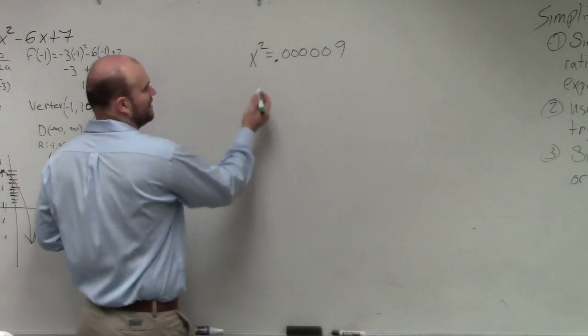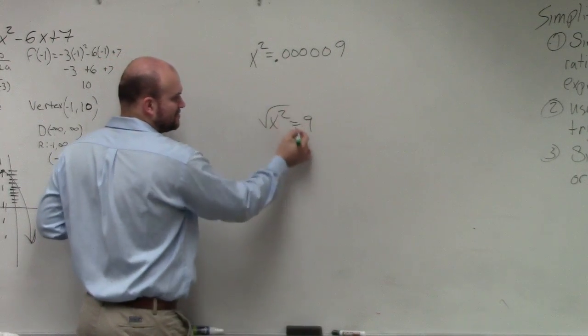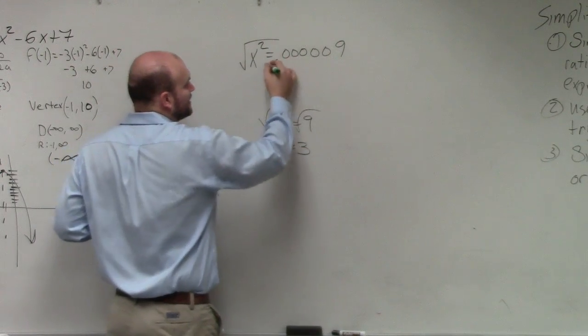Just like if you had any other problem, if you had x² = 9, to solve this you'd take the square root of both sides. So x = 3. Well, that's the exact same thing we're going to do here.